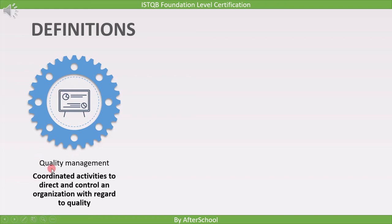The first topic is quality management. This is a series of coordinated activities to direct and control an organization with regard to quality. We are establishing a management system in an organization, and the objective of this management system is to achieve the quality requirement of the organization. Quality management is a larger system introduced into an organization with the single goal of achieving the best quality.